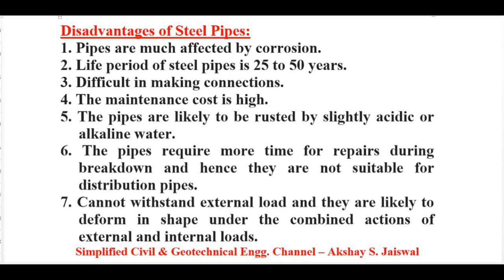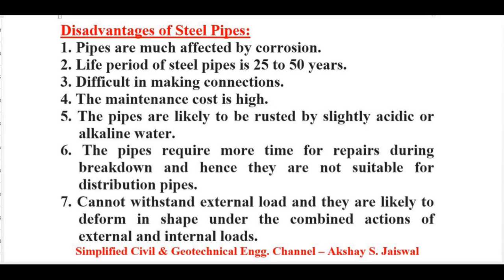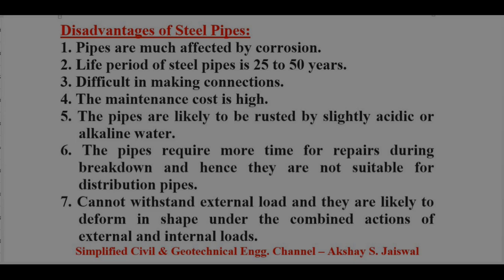Disadvantages of steel pipes: these pipes are much affected by corrosion. Life period of steel pipes is 25 to 50 years. It is difficult to make connections. The maintenance cost is high. The pipes are likely to be rusted by slightly acidic or alkaline water. The pipes require more time for repairs during breakdown and are not suitable for distribution pipes. Steel pipes cannot withstand external load and are likely to deform under the combined actions of external and internal loads.